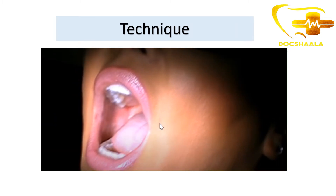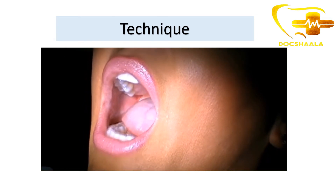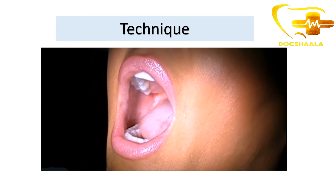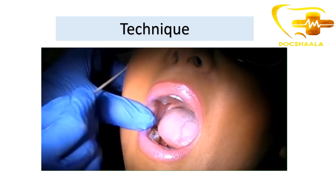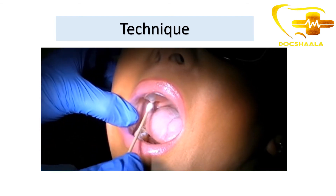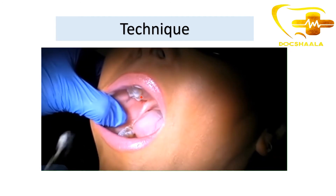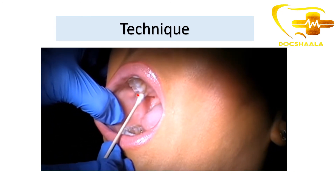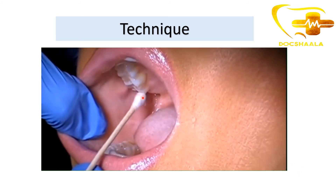In this video, the clinician is first trying to identify the landmarks. He is palpating the intertragic notch, which is the extraoral landmark for the Gow Gates technique. Then he is showing the mesiolingual cusp of the maxillary second molar, which is the intraoral landmark for the technique.